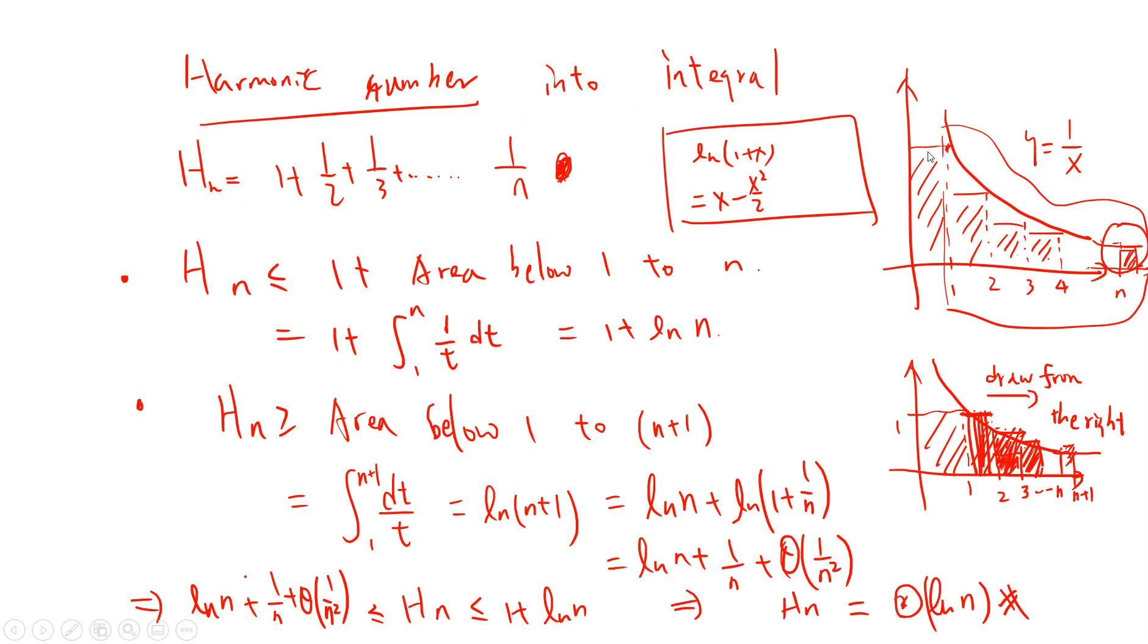So from the picture you see that this is 1, 2, 3. So if you see, you can see a lower bound and upper bound. H_n will be smaller than 1 plus the area below 1 to n. So you get 1 plus the integral from 1 to n of 1/t dt, so it's 1 plus log n. And H_n is greater or equal to the area from 1 to n+1. So it's log(n+1).